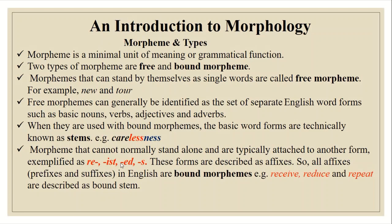In introduction to morphology, we are going to talk about morphemes and their types. A morpheme is a minimal unit of meaning or grammatical function. As we discussed in our previous lecture, there are two types of morphemes: free and bound morphemes. Morphemes that can stand by themselves as single words are called free morphemes — for example, 'new' and 'tour'. They both can stand alone and provide meaning without adding any other morpheme.